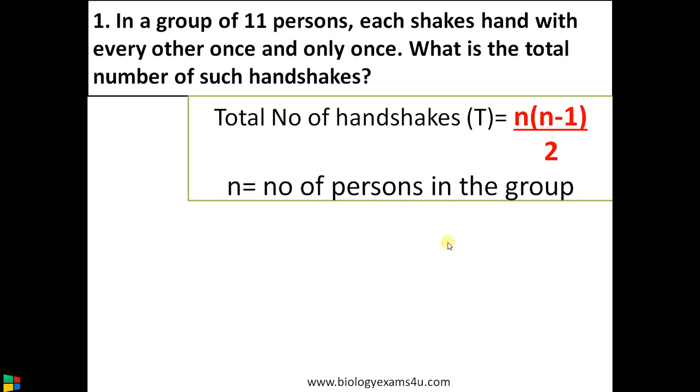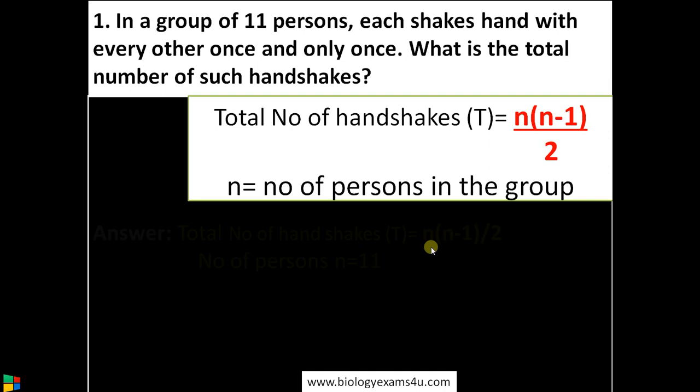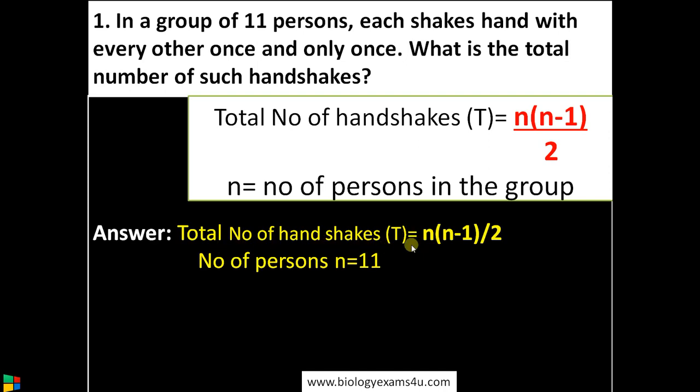So let us substitute the values here. Total number of handshakes T is equal to n into n minus 1 by 2. Number of persons is 11, therefore n equals 11.